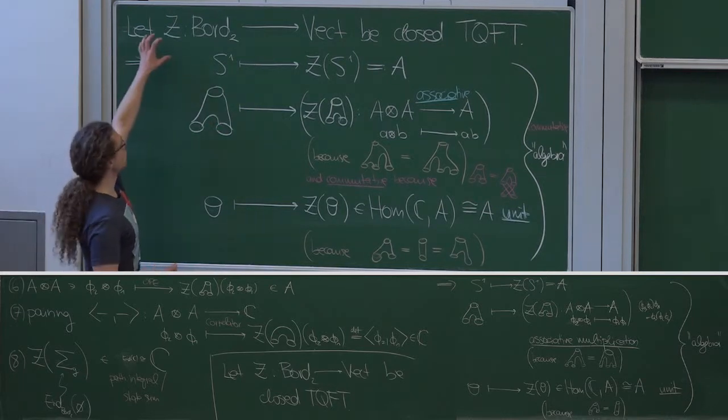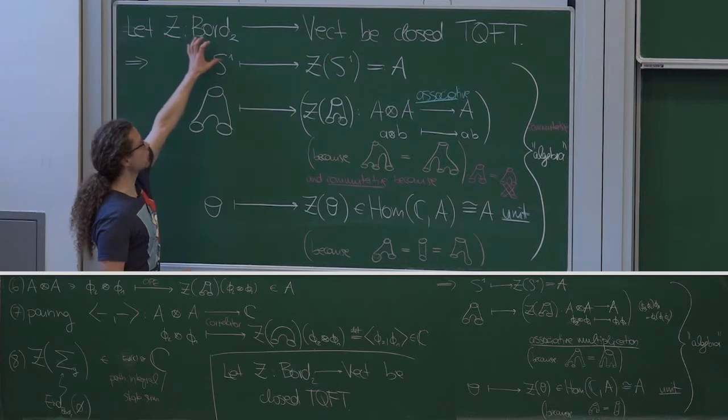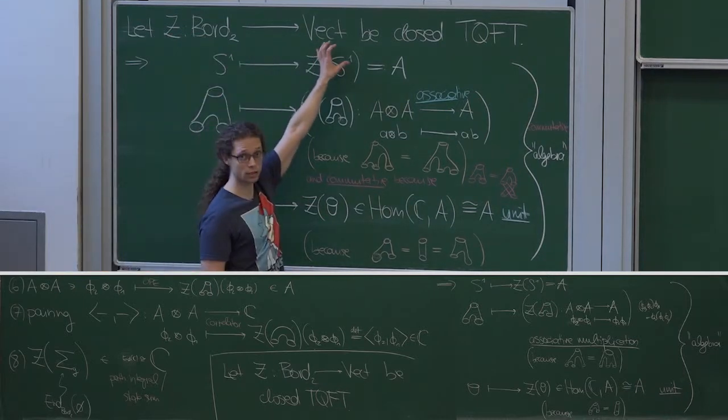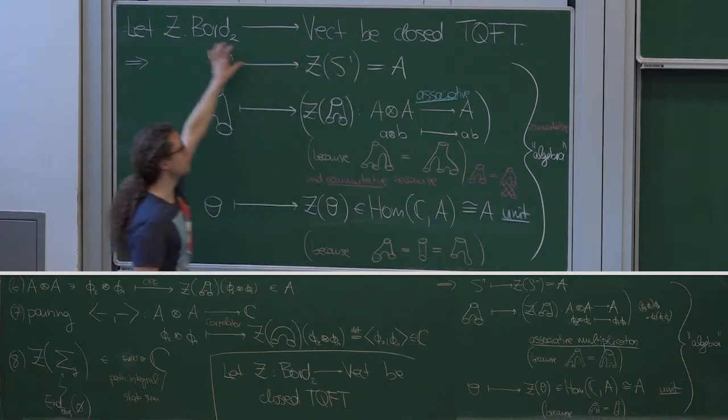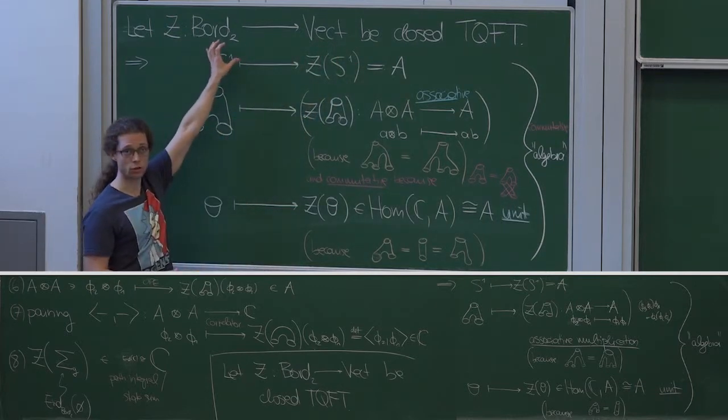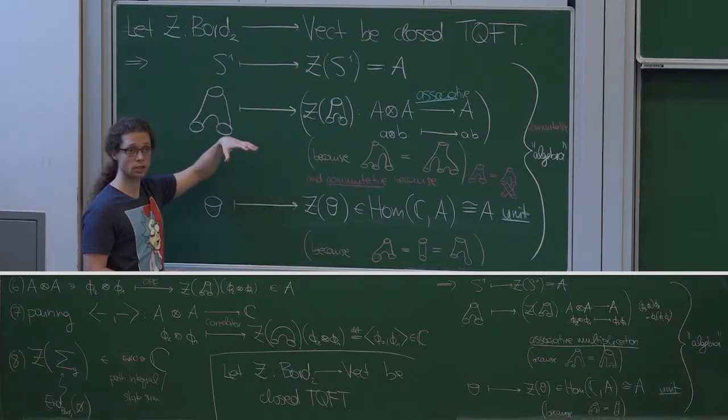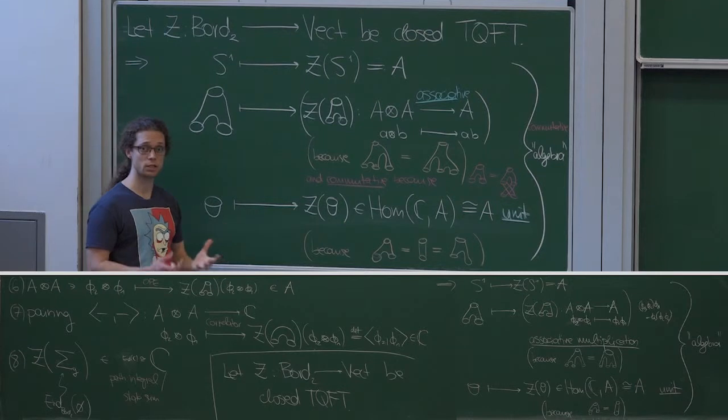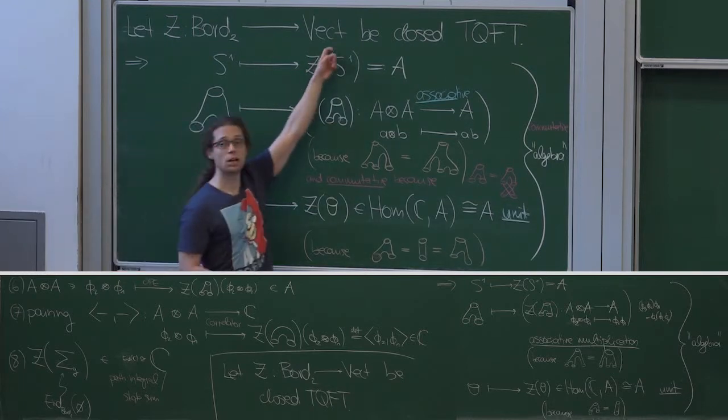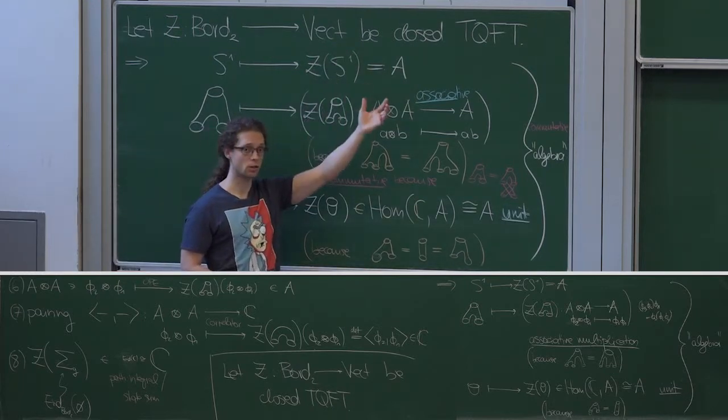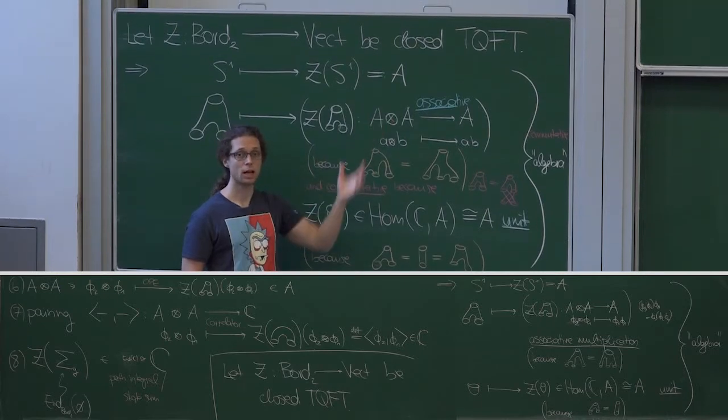I started from such a symmetric monoidal functor from the two-dimensional bordism category to the category of vector spaces, where here the objects are oriented circles, disjoint unions thereof, and morphisms between them are certain equivalence classes of bordisms, that is, two-dimensional surfaces where the circles are the boundary components. Objects and morphisms are respectively complex vector spaces and linear maps.